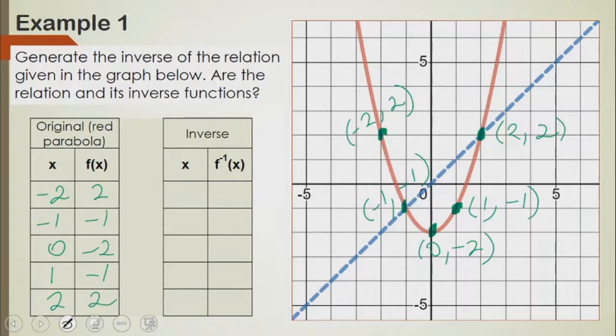Now we have all five points. We need to switch these points. x becomes the y, and y becomes the x. So I write all the y values on the x column, and all the x values on the y column.